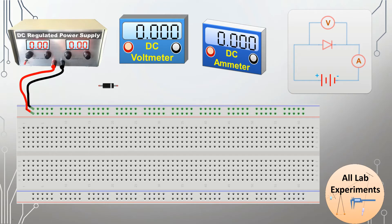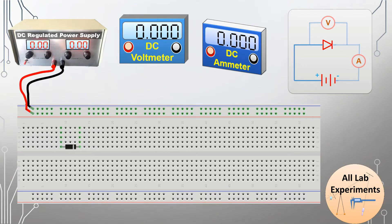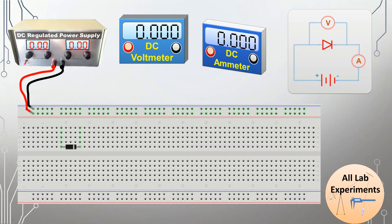Now we take this diode. The left side of this diode is the P side, and the right side with the gray mark is the N side. We place this diode on the breadboard. This vertical line is connected to the P side, and this vertical line is connected to the N side. Now we will connect the positive of our power supply to the positive (P side) of the diode.